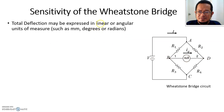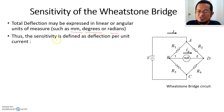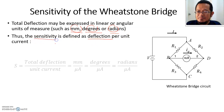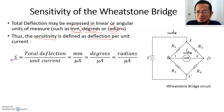Total deflection of a Wheatstone bridge galvanometer may be expressed in a linear or angular measurement, such as millimeter, degrees, or radians. Because of that, we can define the sensitivity as deflection per unit current — whether it's in millimeter, degrees, or radians — when you divide by per unit current. The symbol for sensitivity is S.